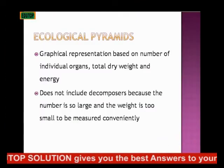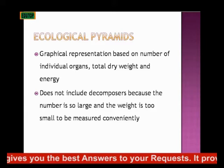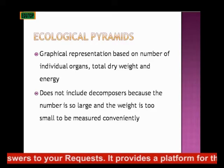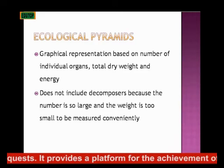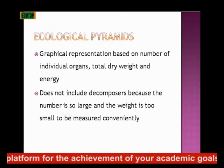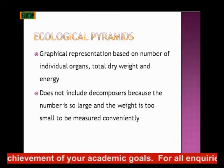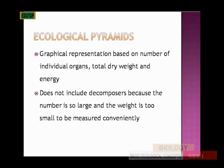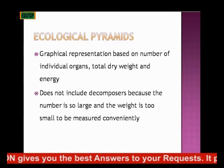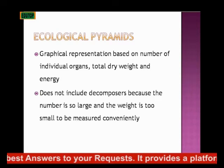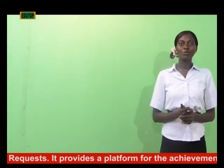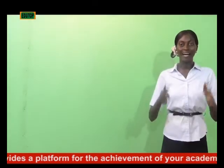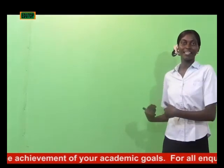We move on to talk about ecological pyramids. Ecological pyramids are graphical representations based on the number of individual organisms, their total dry weight, and the energy of the organisms. The ecological pyramid does not include decomposers because their number is so large — for example, millions of bacteria or fungi work on decomposing a single snake. Because their number is too large and their individual weight is too small, decomposers are not included in the ecological pyramid.